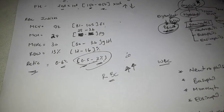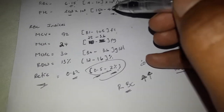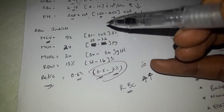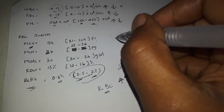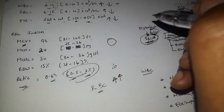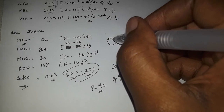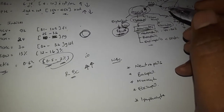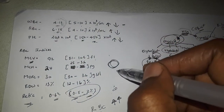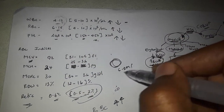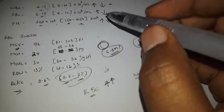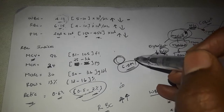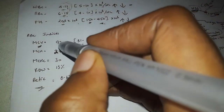When you assess the reticulocyte count, you use it alongside the MCV value. The reticulocyte and the MCV together help indicate what is happening with red cell production and provide diagnostic clues.